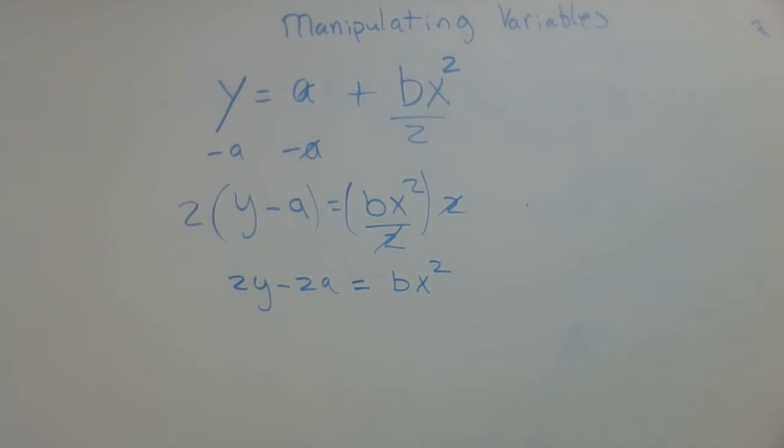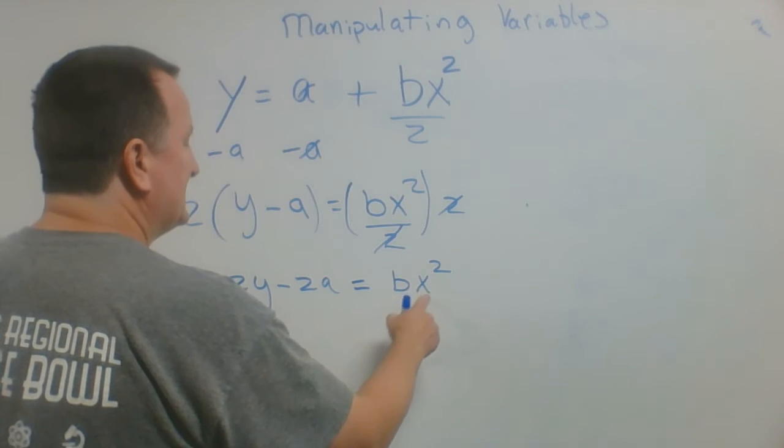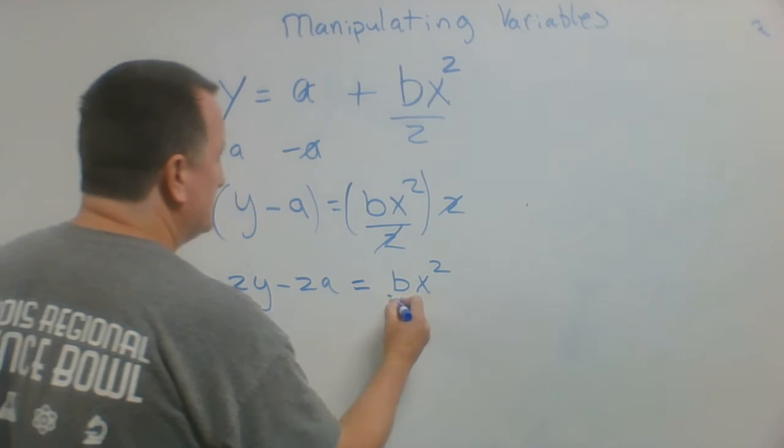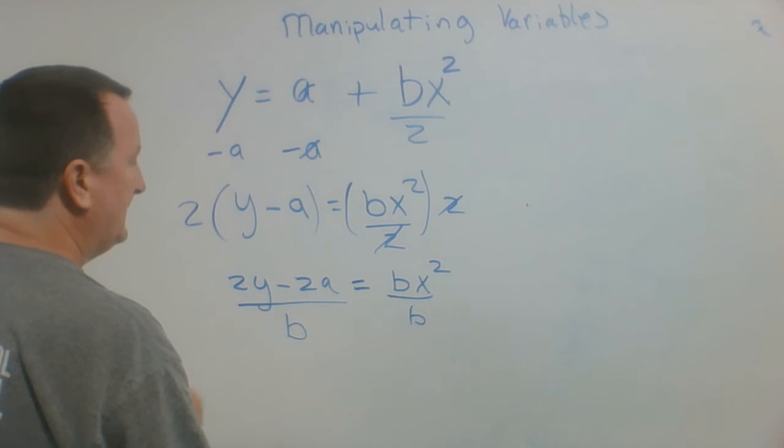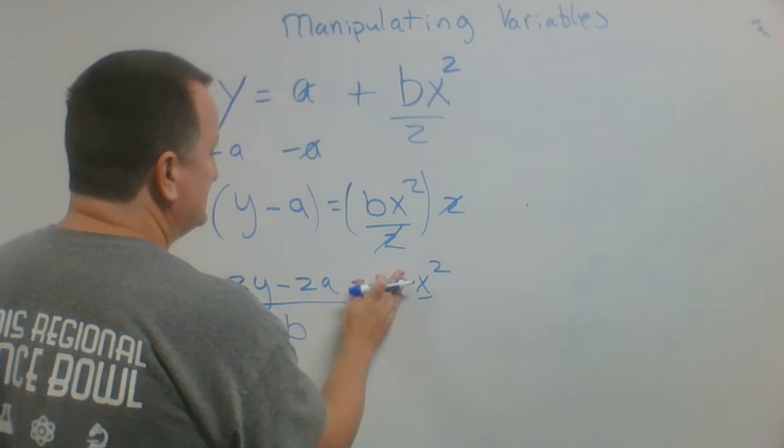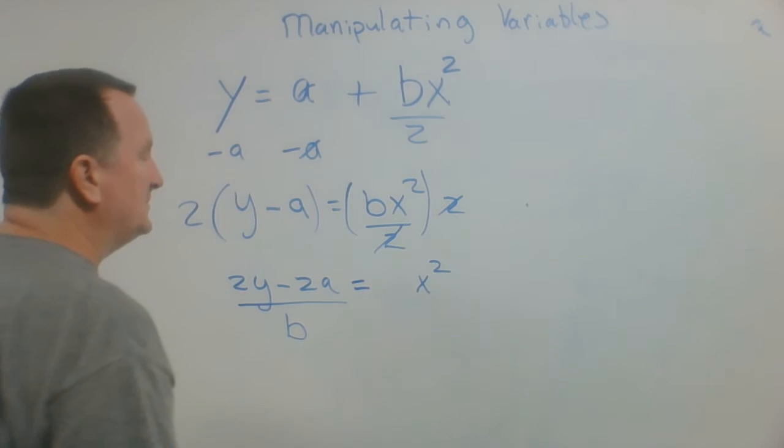Finally, what I need to do is divide by b, because x squared is multiplied by b. So I'm going to divide by b. When I do that, the b's cancel, and I have one more thing I need to do.